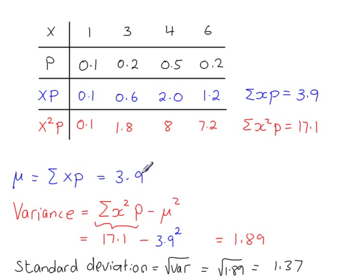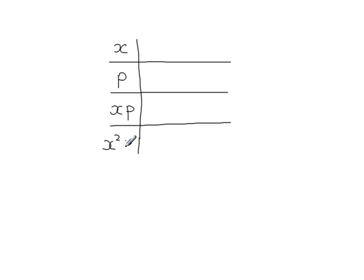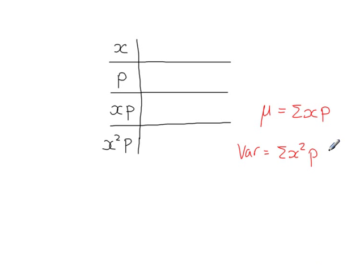So there you have it — you have the mean, the variance, and the standard deviation. Typically in the table you've got x values and p values, and these are given. Looking at the formula for the mean, you need to multiply x and p together. Looking at the formula for the variance, you need to work out x squared times p. The mean is equal to sigma x times p, but remember when you work out the variance, it's not just sigma x squared p — that's a common mistake. Looking at the formula, it's that minus the mean squared. And then to work out the standard deviation, you're just square rooting the variance.